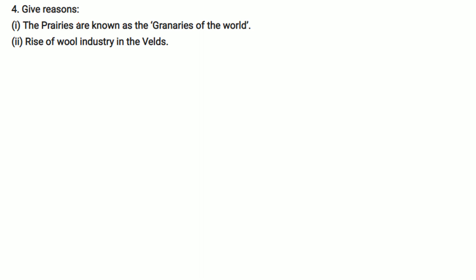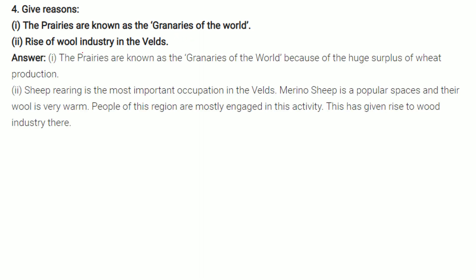For the give-reasons section: The prairies are known as the granaries of the world because of the huge surplus wheat production. Regarding the rise of wool industry in the velds: sheep rearing is the most important occupation in the velds. Merino sheep is a popular species and their wool is very warm, so people of this region are mostly engaged in this activity, giving rise to the wool industry here.